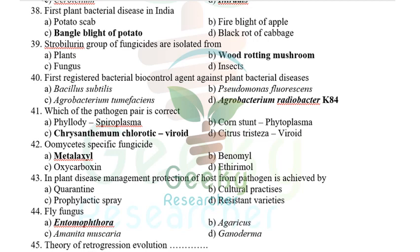The first plant bacterial disease in India is Bengal blight of potato, first reported by E.J. Butler, the father of plant pathology in India. The strobilurin group of fungicides is isolated from a wood-rotting mushroom called Strobilurus tenacellus.